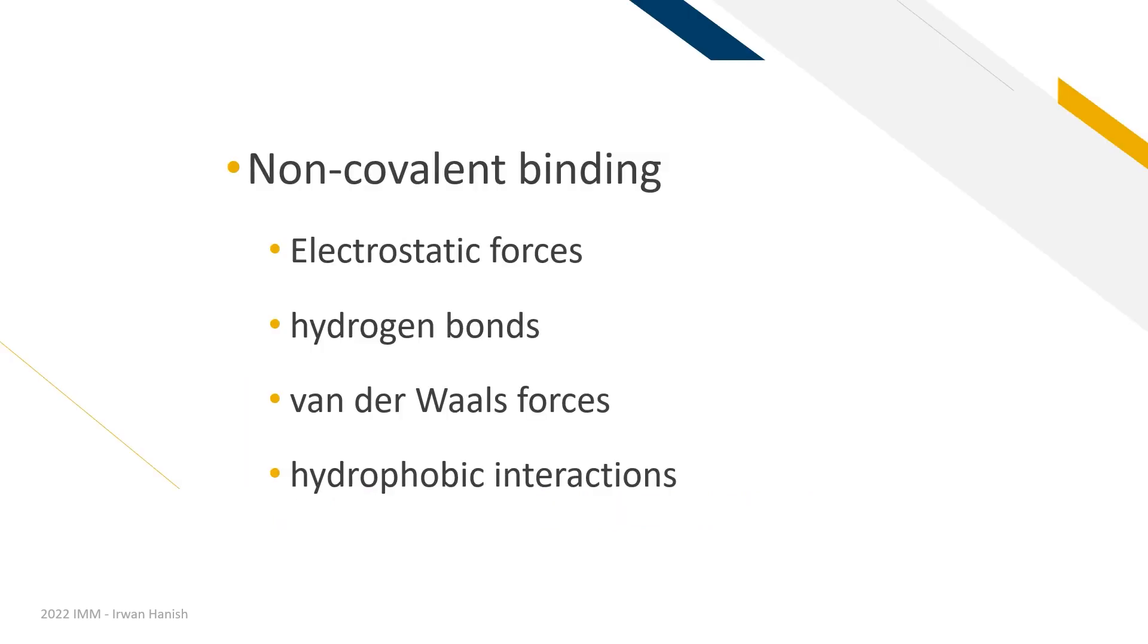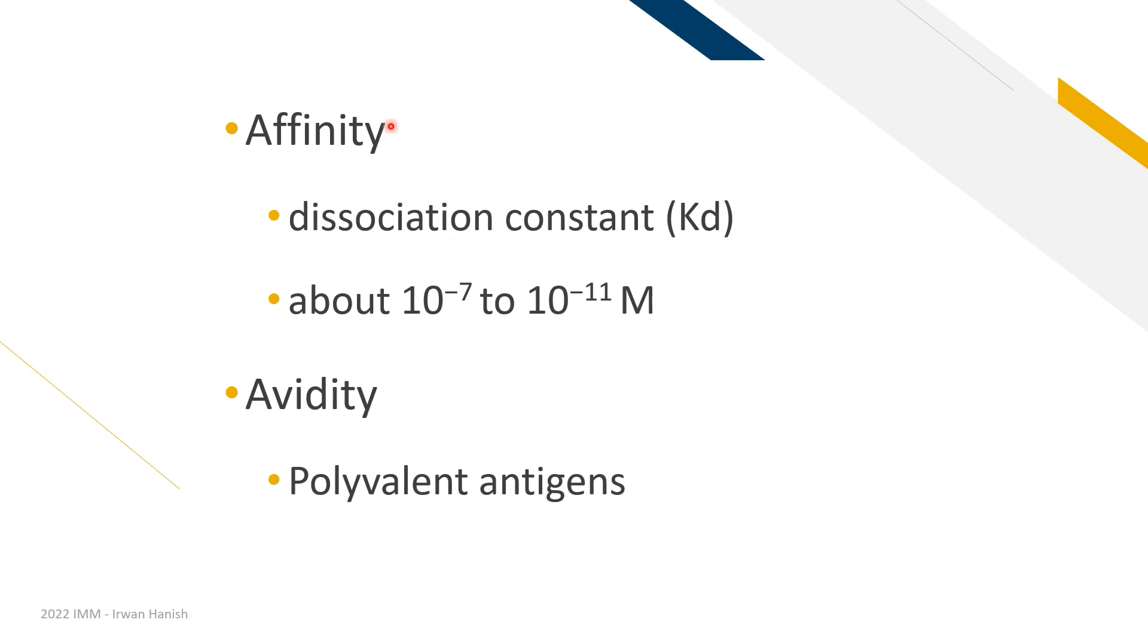This binding between antigen and antibody is non-covalent in nature. Depending on the exact interaction of that binding, you can have electrostatic forces, hydrogen bonds, van der Waals forces, hydrophobic interactions. So the key feature of these non-covalent bindings is that it is reversible. The binding is not permanent. And the strength of that reversible binding is called affinity. Affinity is measured by dissociation constant. It tells you the relative easiness of breaking that antigen-antibody binding. The higher the dissociation constant, the easier to break that antigen-antibody binding. That also means the higher the KD value, the lower the particular affinity is. And the typical value in an antibody-mediated immune response is between 10 to the power of negative 7 to 10 to the power of negative 11 molar.